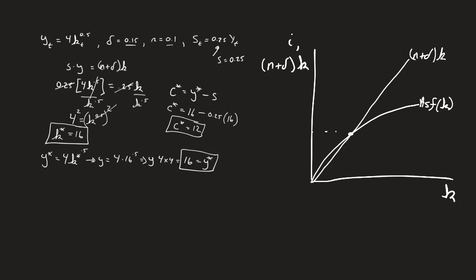Where they cross, that's going to get my capital. My capital is going to be equal to 16. And what was my investment? My investment was equal to 4. How do I know that? That's simply just n plus delta times k. n plus delta was 0.25 or 25% of my 16, which is equal to 4. So that's what we would label at that point.